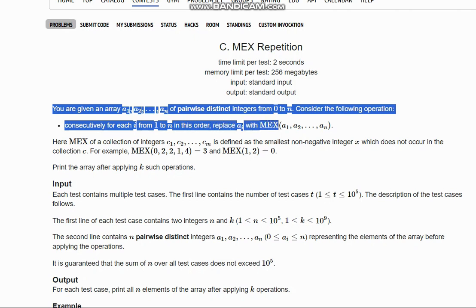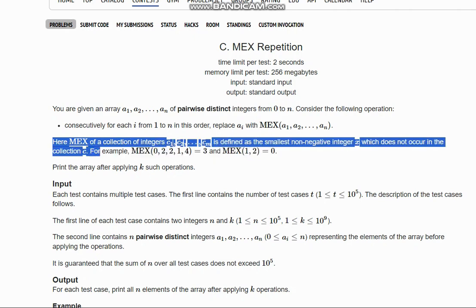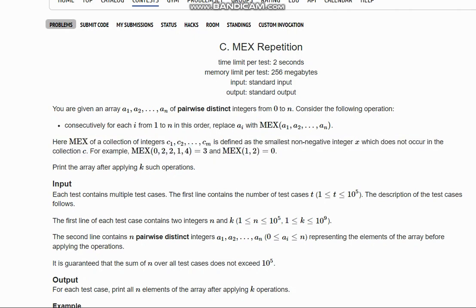So MEX means the smallest non-negative integer x which does not occur in the collection c. For example, if we have this collection as 0, 2, 1, 4, then the smallest integer which is not occurring in this is 3. And the smallest integer which does not occur in 1, 2 is 0.